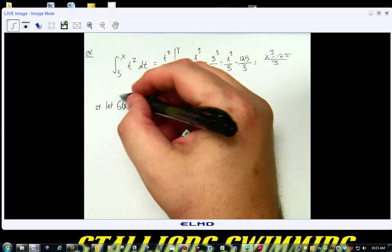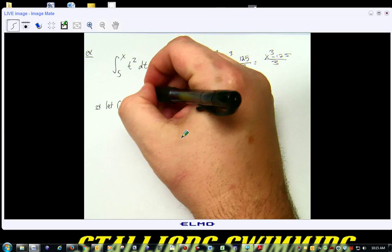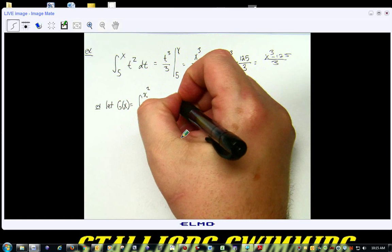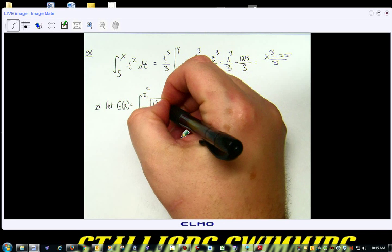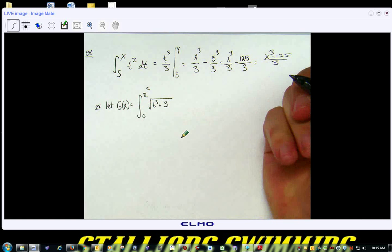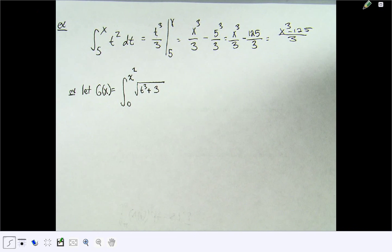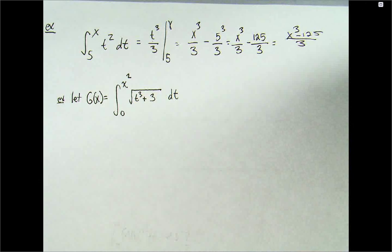We're going to let g of x be equal to the integral from 0 to x squared. Now, there's an issue that comes up here. We have the integral from 0 to x squared of t cubed plus the square root of t cubed plus 3 dt.